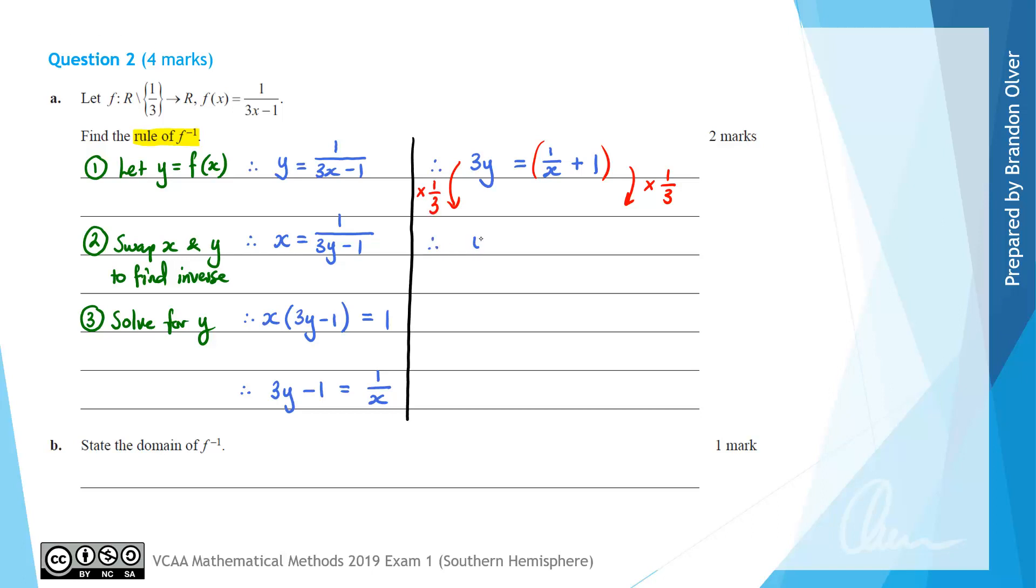Therefore we'll get y equals finally. Multiplying 1/x by 1/3 gives 1/3x. Likewise, when we multiply 1 by 1/3 we get plus 1/3.